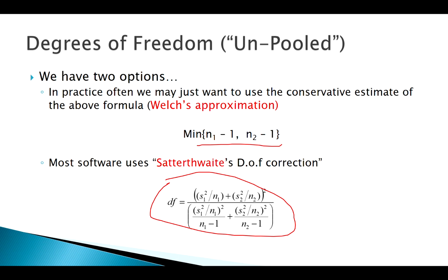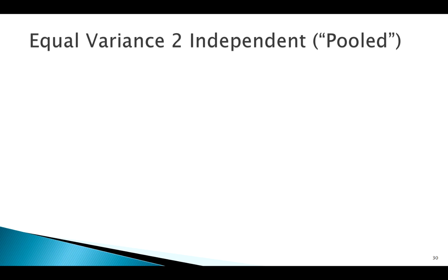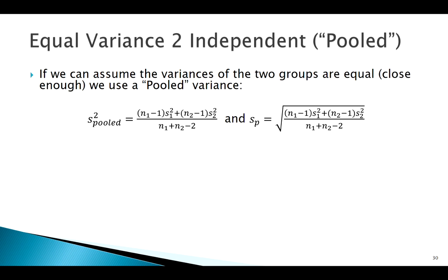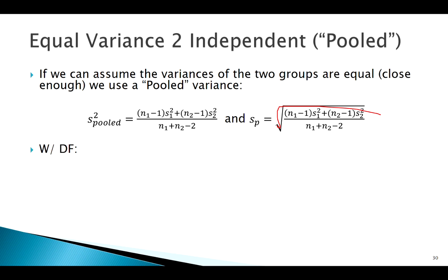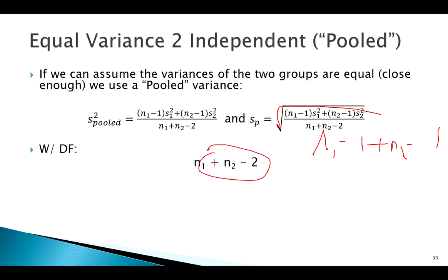Now, going back to pooling: here's how you calculate your pooled variance. The pooled standard deviation is just the square root of that. For degrees of freedom in a pooled t-test, it's much easier: it's (n1 − 1) + (n2 − 1), which gives us n1 + n2 − 2. So degrees of freedom is way easier when things are pooled, but calculating the pooled standard deviation is a bit more involved.